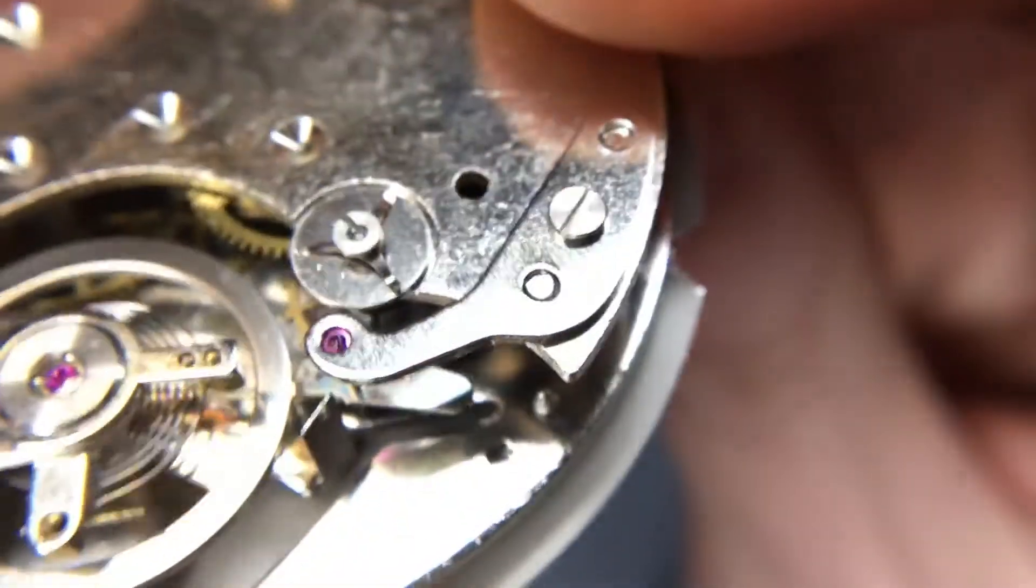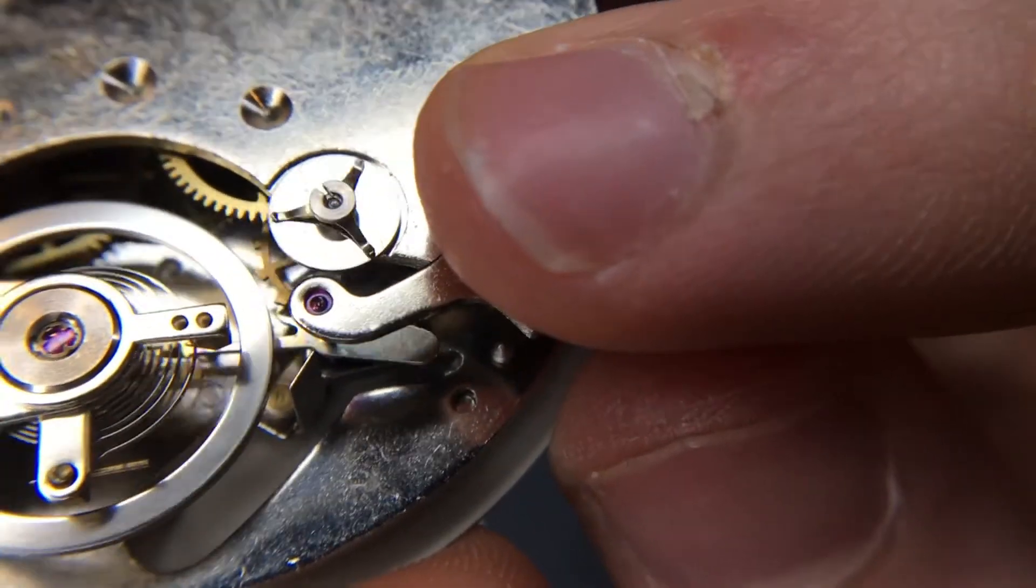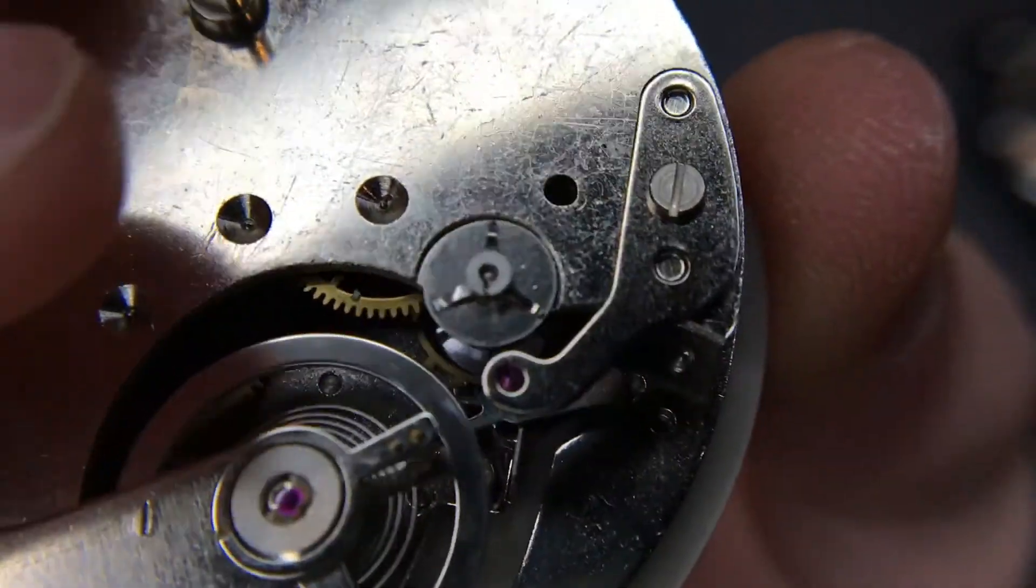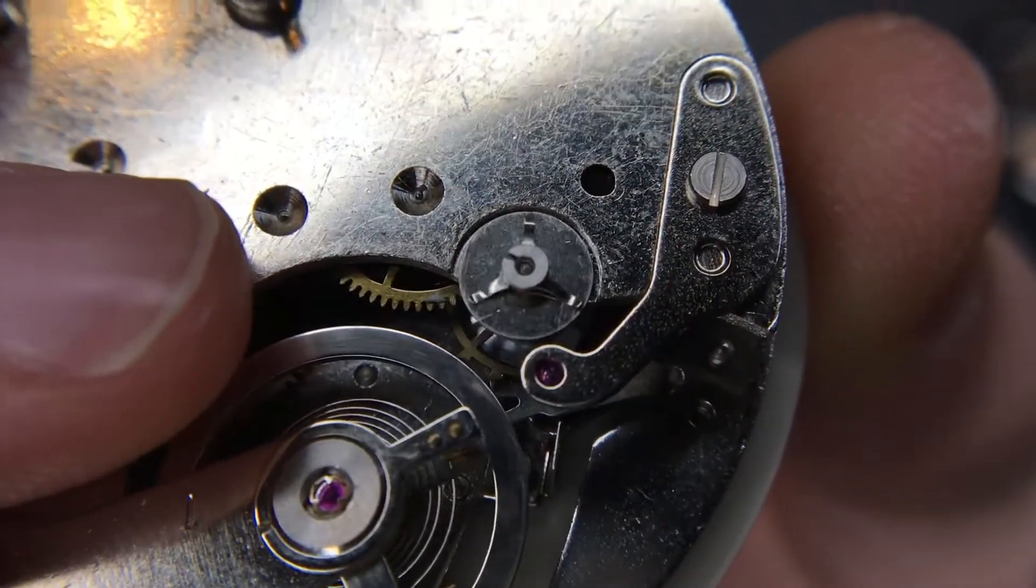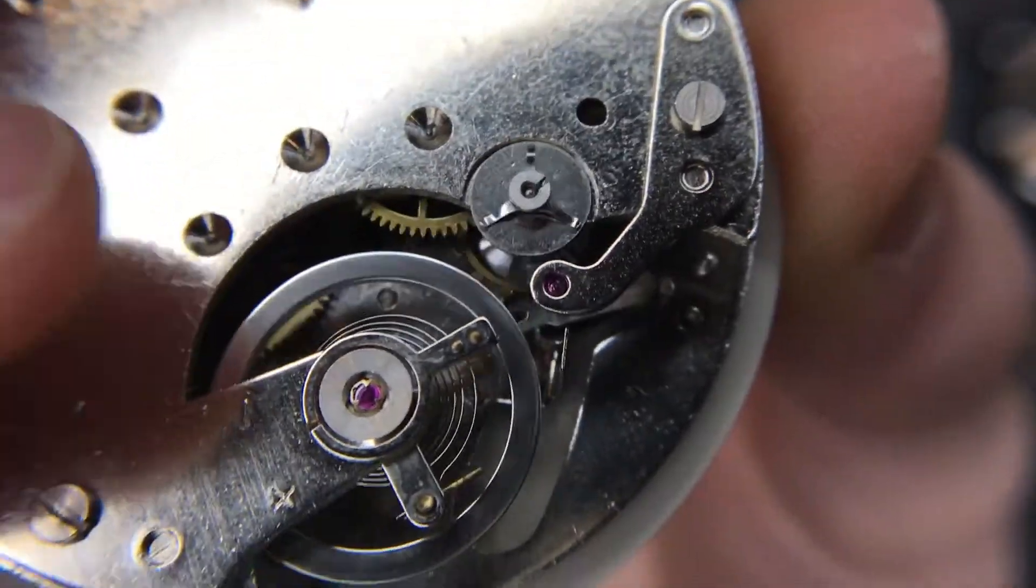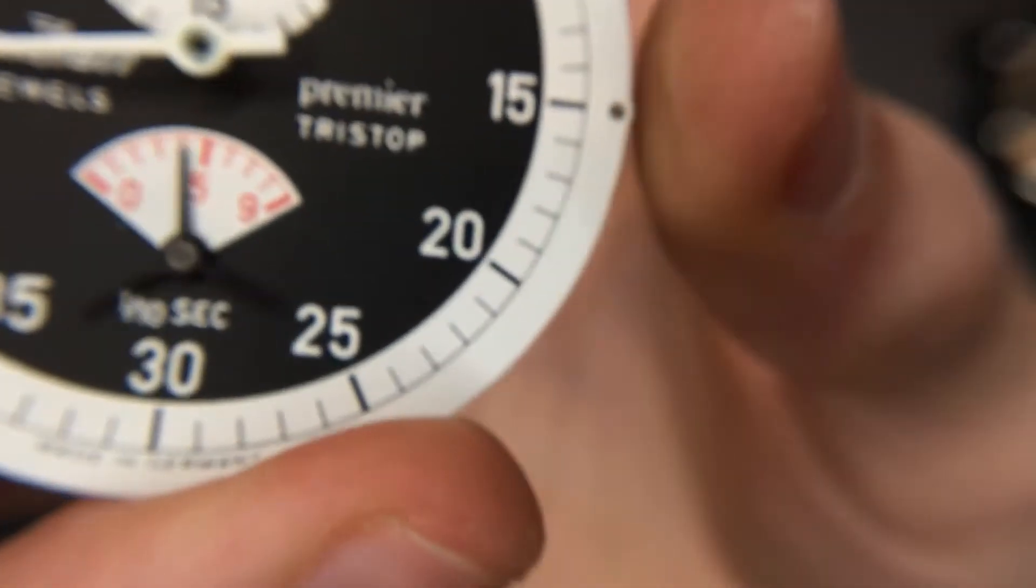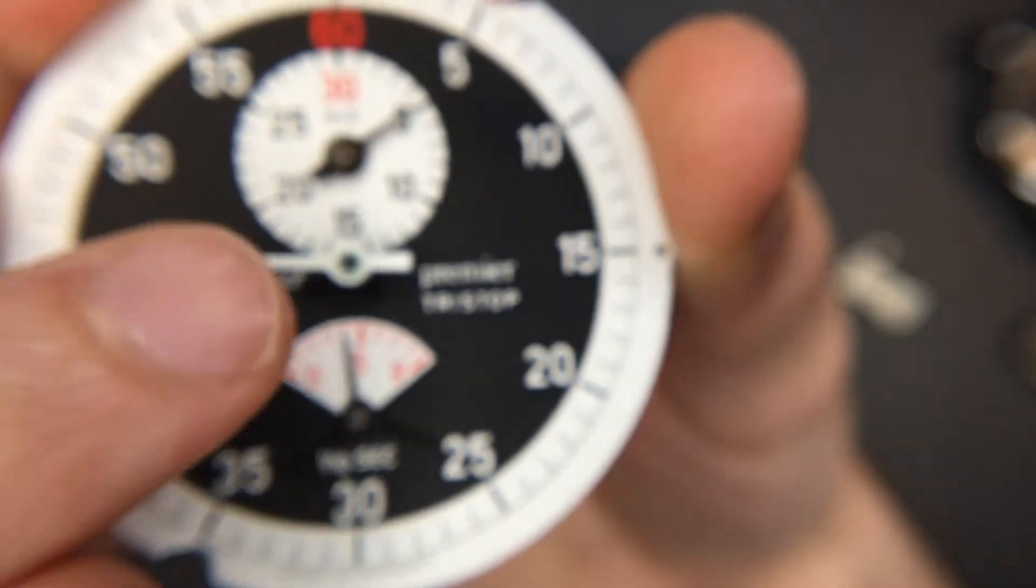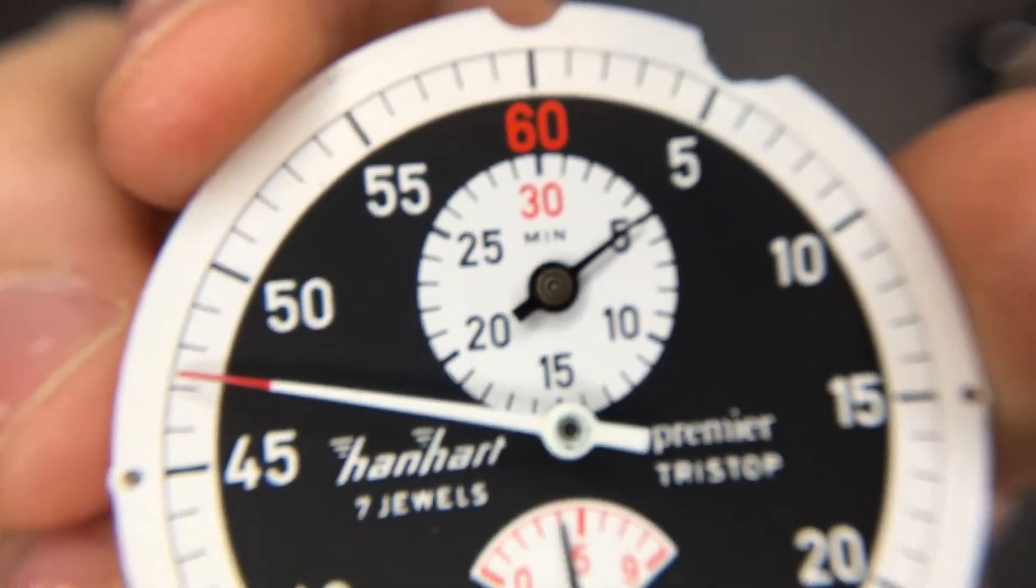And you can actually sort of see the rotation from this little locking pin as it rotates around. It will then cause this gear here to have a pretty fixed speed, which then turns the main hand at constant rate.